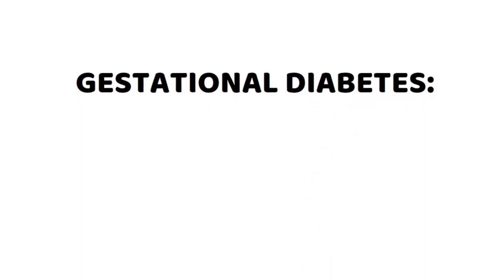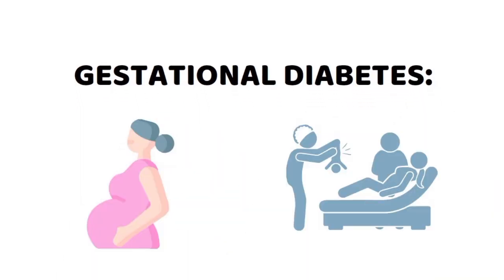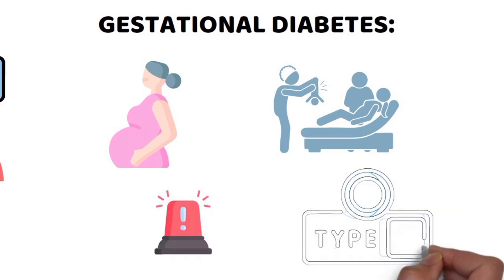Gestational diabetes develops during pregnancy and usually resolves after childbirth, but it increases the risk of type 2 diabetes later in life.